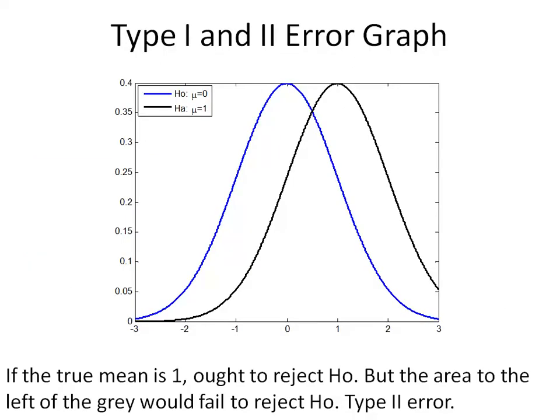So graphically what this means is, say we have the same example before where we have a null hypothesis, and this is the distribution of our null hypothesis in blue. And we have a specific alternate hypothesis, and this is the distribution of it in black. Say for example, we find a t-critical value for our null hypothesis of just less than 2. So the area under the curve to the right of that t-critical value on the null hypothesis distribution is alpha, which is generally set to 0.05.